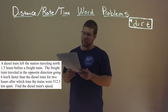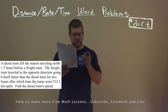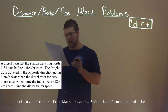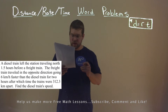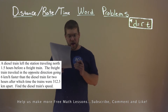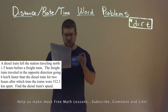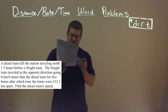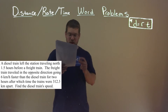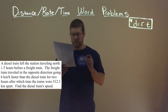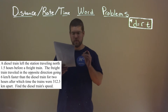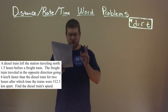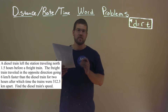I'm given this problem. A diesel train left the station traveling north 1.5 hours before a freight train. The freight train traveled in the opposite direction, going 6 kilometers per hour faster than the diesel train for 2 hours. After which time, the trains were 312.3 kilometers apart. Find the diesel train's speed.